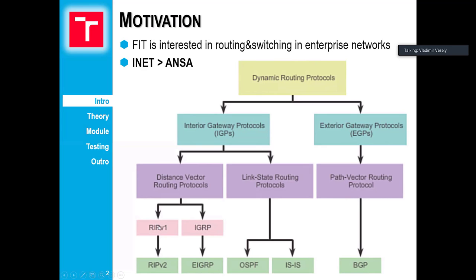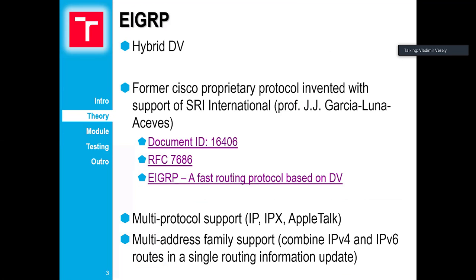EIGRP is in the family of distance vector routing protocols — it is a hybrid distance vector routing protocol. The reason why it is called hybrid is that it combines the best features of link state protocols, such as link detection and neighbor status, with the light-weightness of distance vector protocols such as RIP or BABEL.